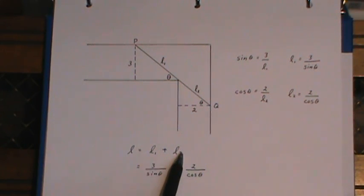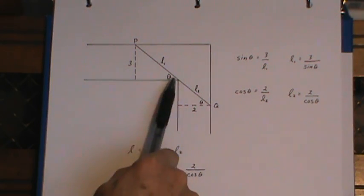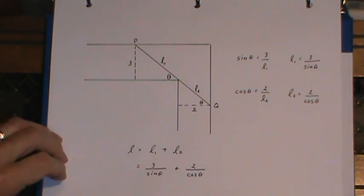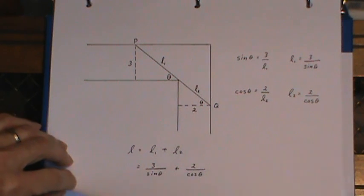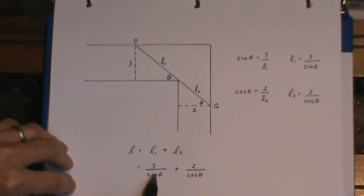So that means the length of the ladder, which is the sum of L1 and L2, can be written in terms of one variable, and that's the angle here. Now in order to take the derivative of this, I didn't want to use the quotient rule, so I rewrote this as sine to the negative one.